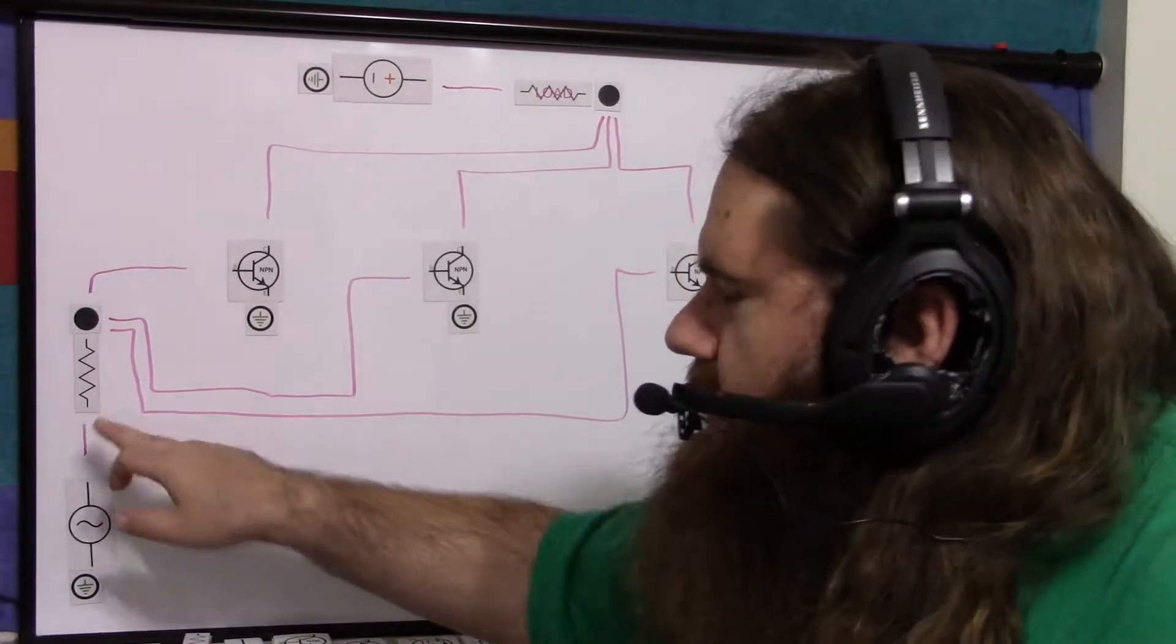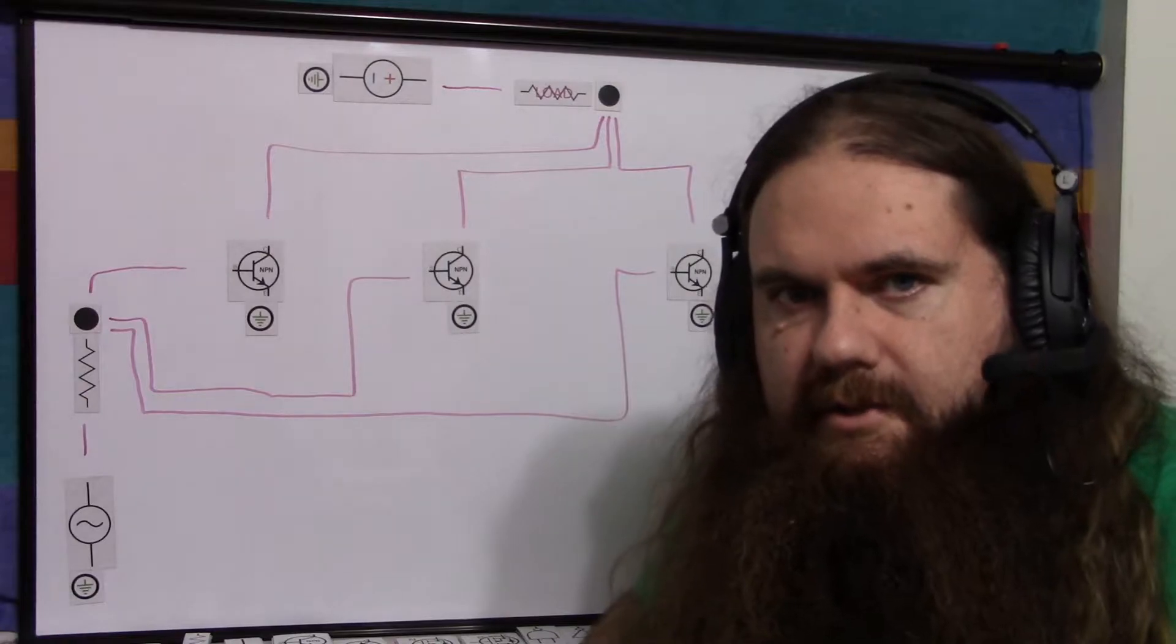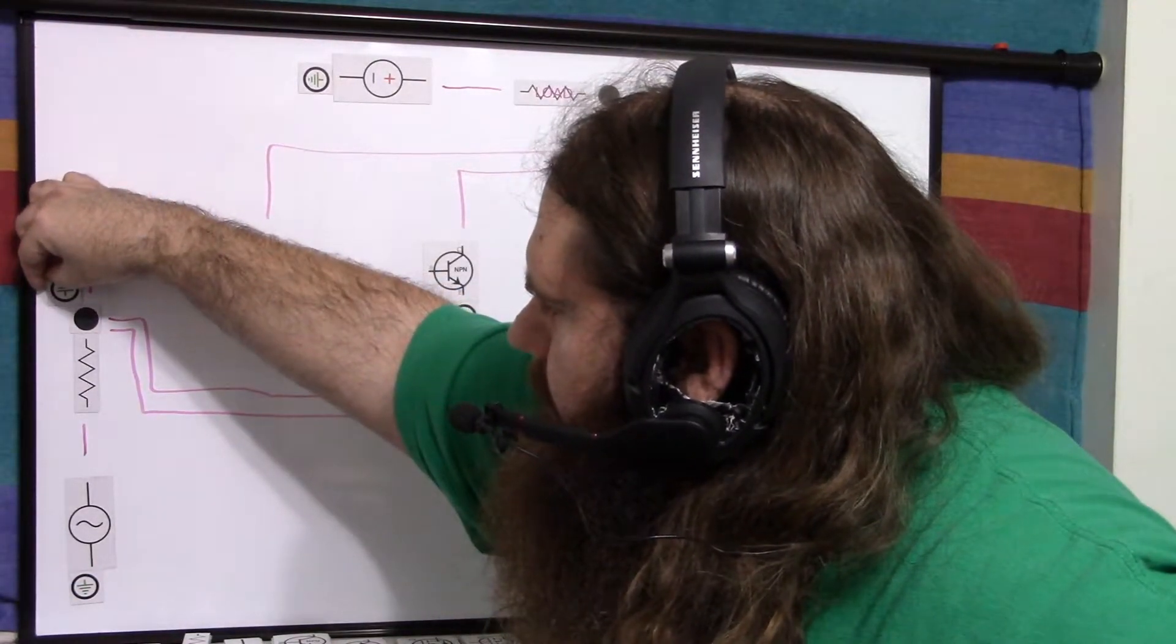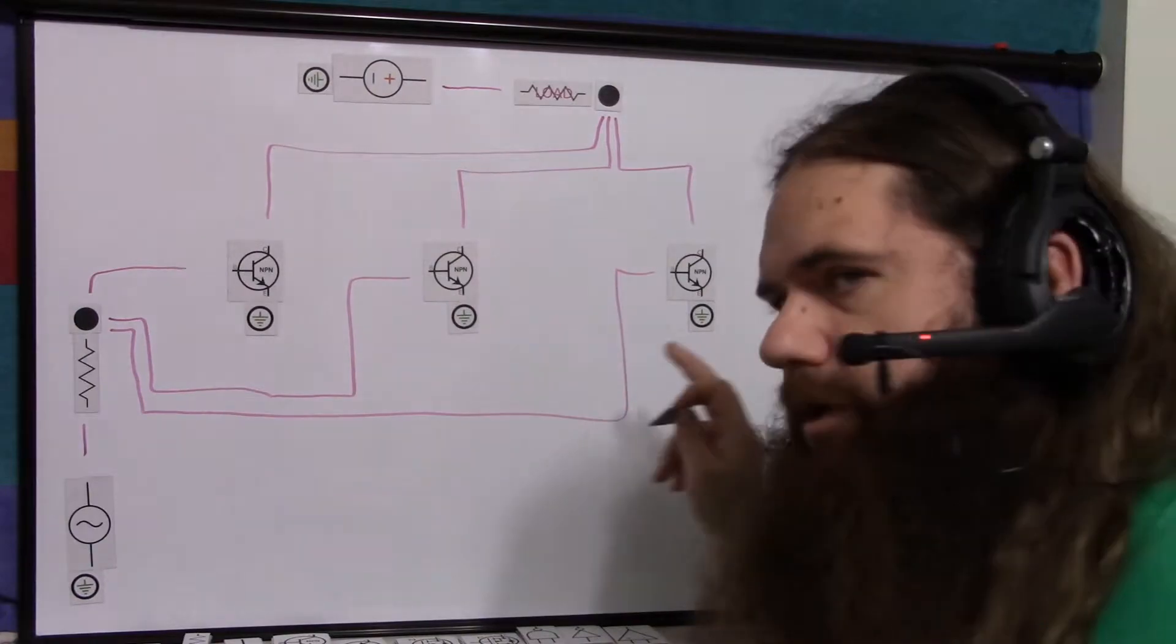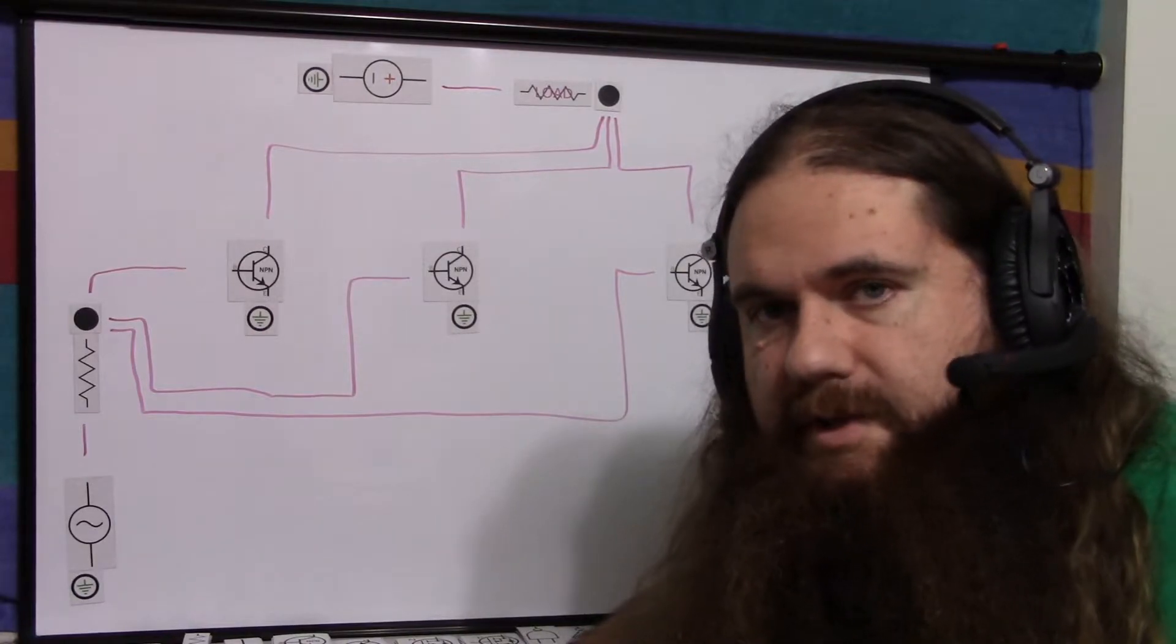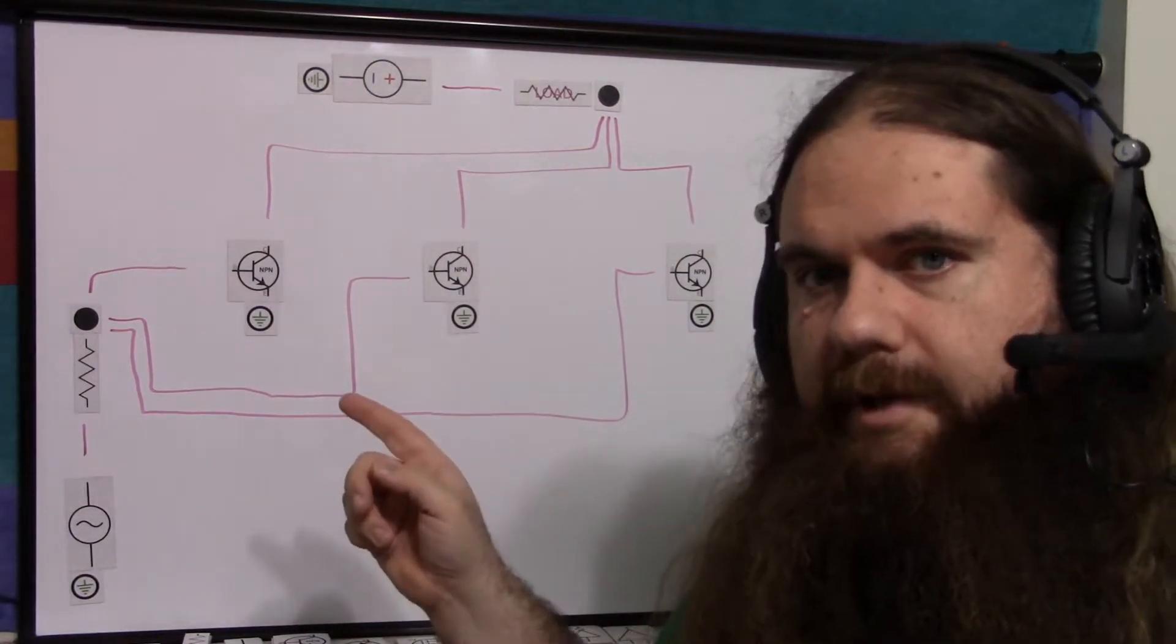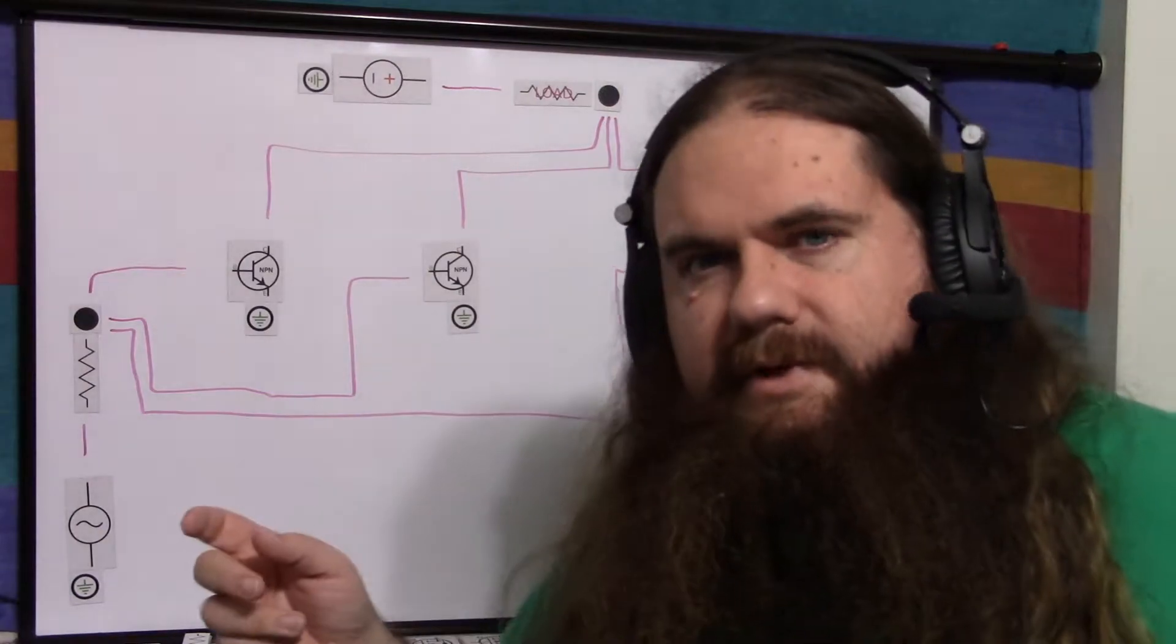But the other issue is that the current limiting resistor limits current based on how many transistors there are. If you add or remove transistors, then the same current is going to get split. Because if you assume, instead of transistors, you just have this connected straight to ground, then there is a certain maximum current that can possibly flow through this resistor. So that current has to be shared amongst the transistors. What you should actually do is have a separate base resistor for each transistor. Because if you add or remove transistors, you're not changing anything about how any of the other transistors operate.